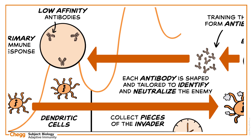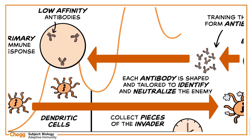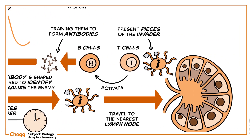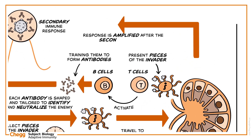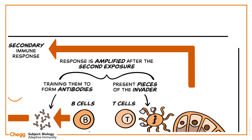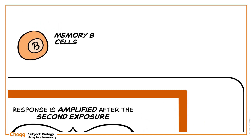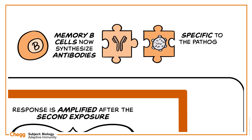After primary exposure, the primary immune response has some value. However, this response is amplified after the second exposure. This is because of the memory B cells, which now synthesise antibodies that are specific to the pathogen encountered before.